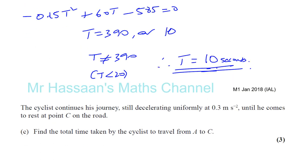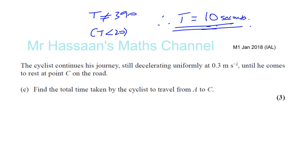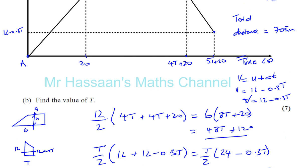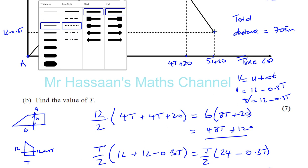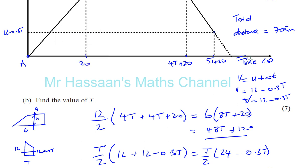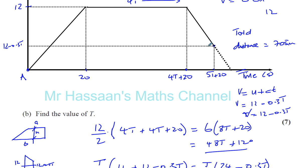Part C: the cyclist continues his journey still decelerating at 0.3 meters per second squared until he comes to rest at point C. We need to find the total time from A to C. First, let's work out his speed at point B, which is 12 minus 0.3 times 10, which equals 9 meters per second.